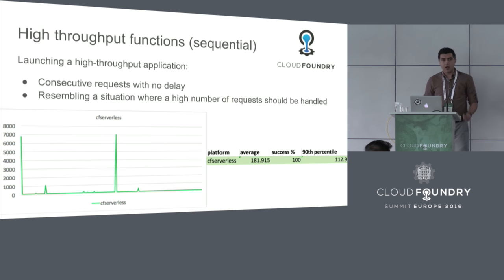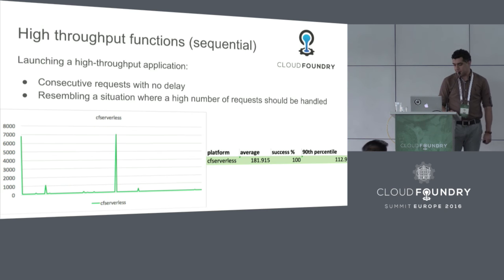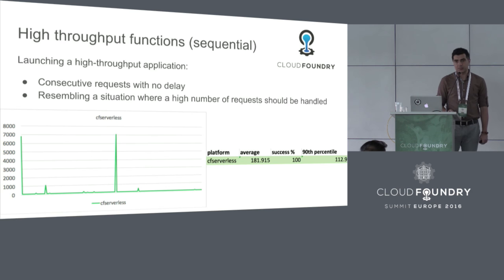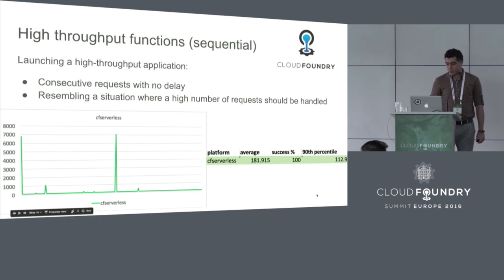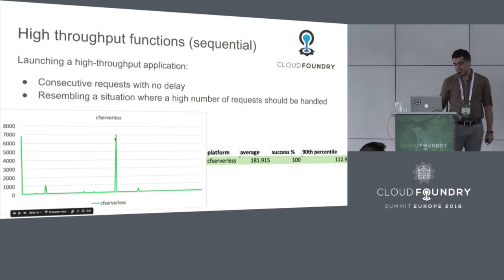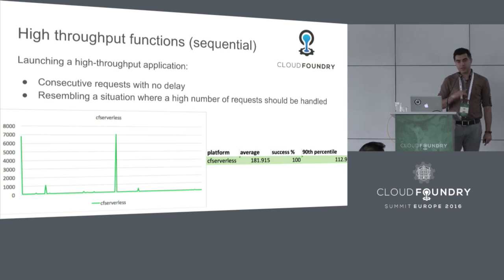Looking at results for a high throughput function — a simple echo function — all 100 requests were successful, and the average time for every request to come back was around 180 to 200 milliseconds. There are spikes in the experiments, and those are the ones that actually took longer for the container to be set up. The spikes are where the container wasn't there, so it took close to seven seconds to create the container, put the code on it, and respond to the first call. But once that first call was through, the remaining calls were much faster.